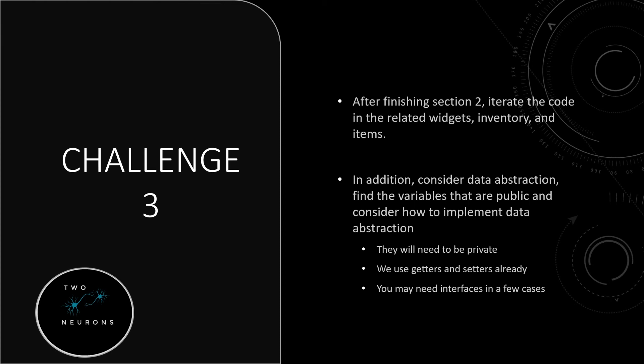Find the variables that are public and consider which ones need to be private and how to implement that data abstraction. Those variables will need to be private; you'll need to use getters and setters, which we've already done in many cases, but you'll need to find a way to implement these — maybe using interfaces in a few cases.